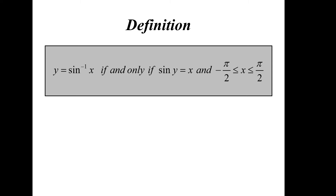Here's the definition for the inverse sine: y equals inverse of sine of x if and only if sine of y equals x, and negative pi over 2 is less than or equal to y, less than or equal to pi over 2. This gives the restricted range from negative pi over 2 to pi over 2. We need this to satisfy the vertical line test — if the line touches the graph at one point only, the graph is a function; if it touches at more than one point, it's just a relation.